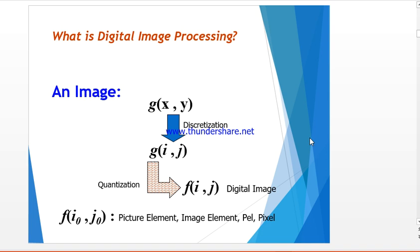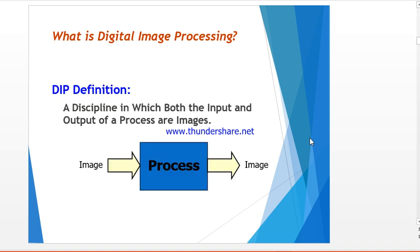The field of digital image processing refers to processing digital images by means of a digital computer. A digital image is composed of a finite number of elements, each of which has a particular location and value. These elements are called picture elements, image elements, pels, or pixels. In the definition of DIP, we say it is the discipline in which both input and output of the process are images — meaning our input as well as our output should both be in the form of an image.